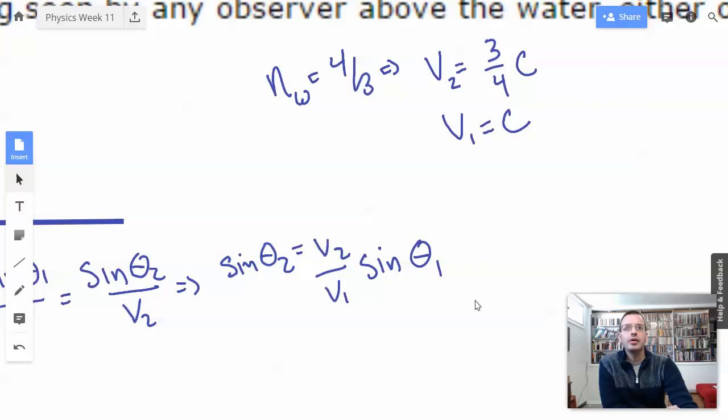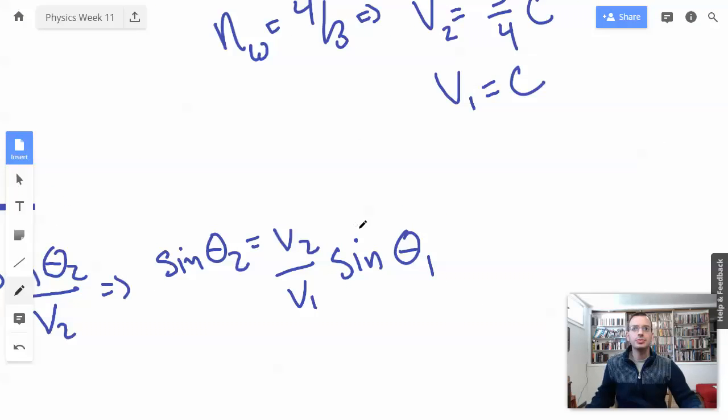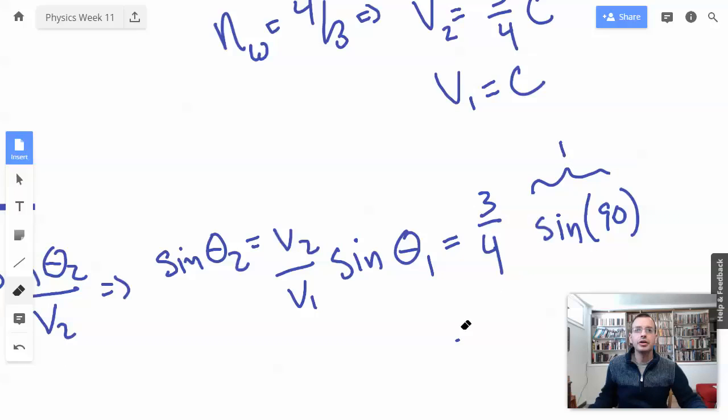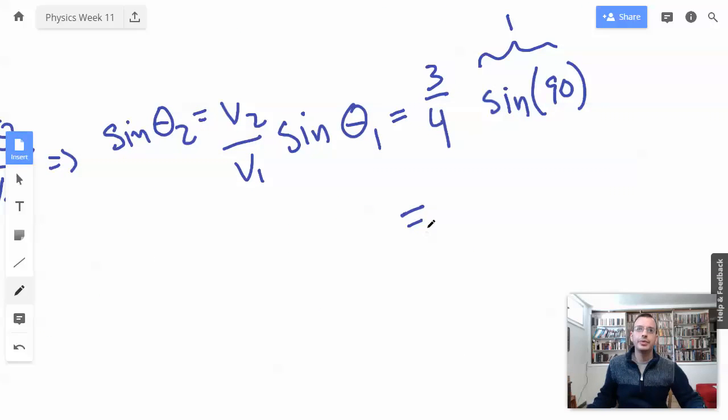So, simplify this guy a little bit. V2 is 3 fourths C, divided by C, which is just 3 fourths, sine of 90, and we're going to look at the absolute shallowest angle possible. So this guy is going to be 1. I'm going to do arrow, so implies. I'm saying it's connected, just no commitment.